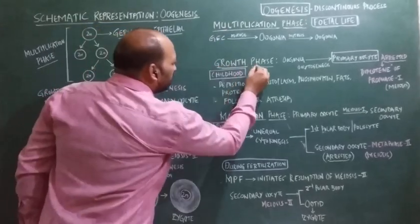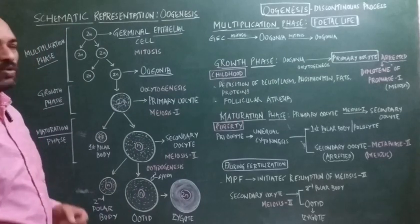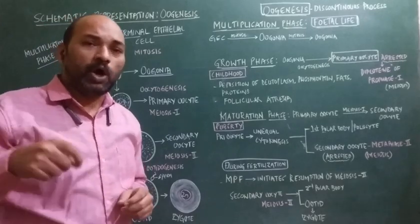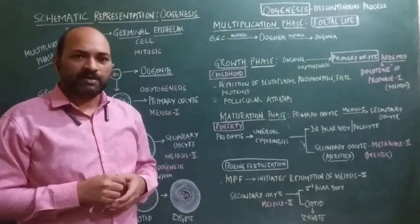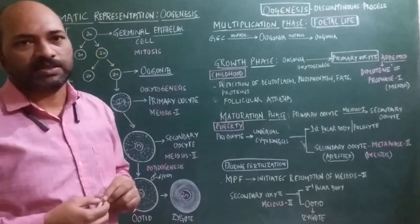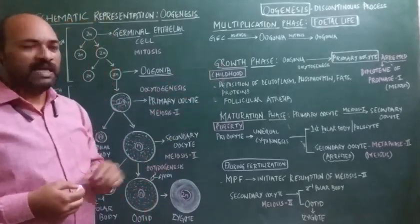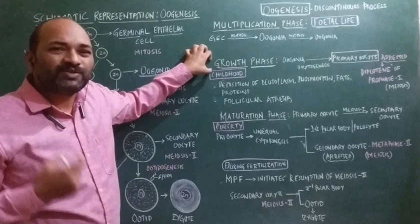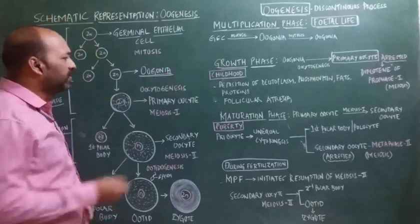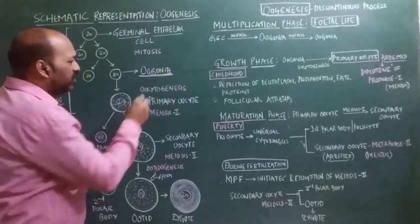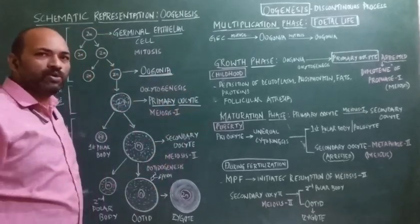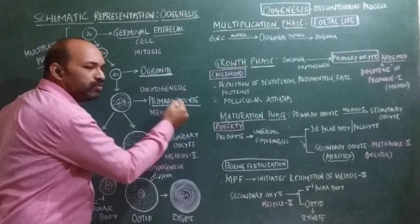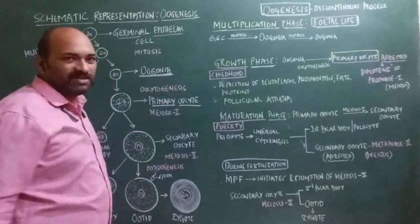After oogonial proliferation is completed and the female child is delivered, the next phase begins — the growth phase. The growth phase is the second phase in oogenesis and is longer compared to the growth phase of spermatogenesis. During the growth phase, oogonia undergo growth and increase in size, getting transformed into primary oocytes. This process of conversion of oogonia into primary oocytes is called oocytogenesis, which occurs during childhood.